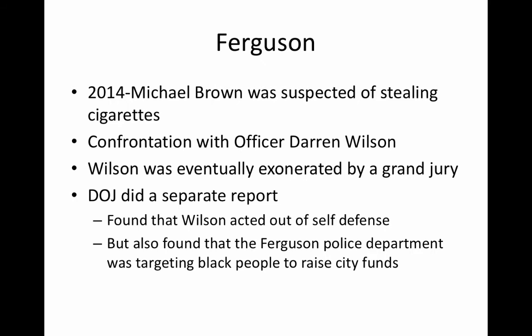This escalated further in 2014 when Michael Brown was suspected of stealing cigarettes from a local store. Officer Darren Wilson pulled him over as he was walking, got into a fight with him, and Wilson's gun went off. Brown ran, and Wilson shot and killed him. Wilson was exonerated by a grand jury on self-defense grounds. But the same DOJ also issued a separate report finding that the Ferguson Police Department had been systematically targeting black people to raise city funds.